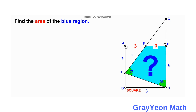We focus on triangles AFE and GFB. They share angle F, which are vertical angles and therefore congruent. Angles at A and B are both right angles and therefore congruent. The included side AF is 3 units for the lower-left triangle, and FB is also 3 units for the upper-right triangle. By ASA congruence, these two triangles are congruent, so side GB also equals X, corresponding to AE.